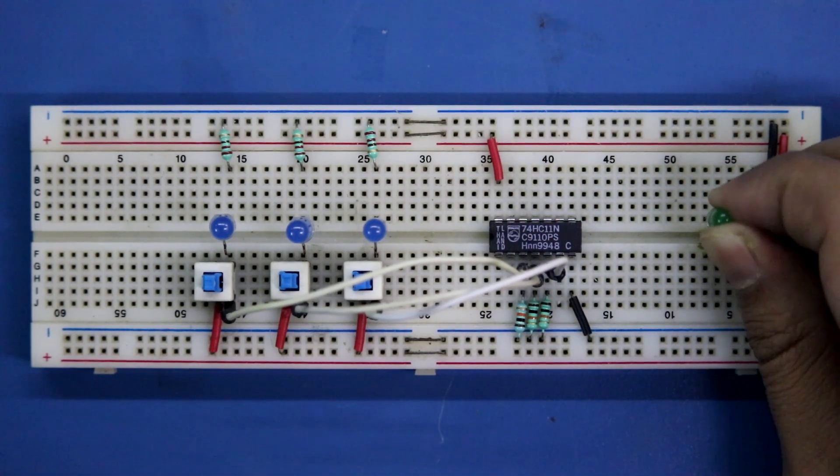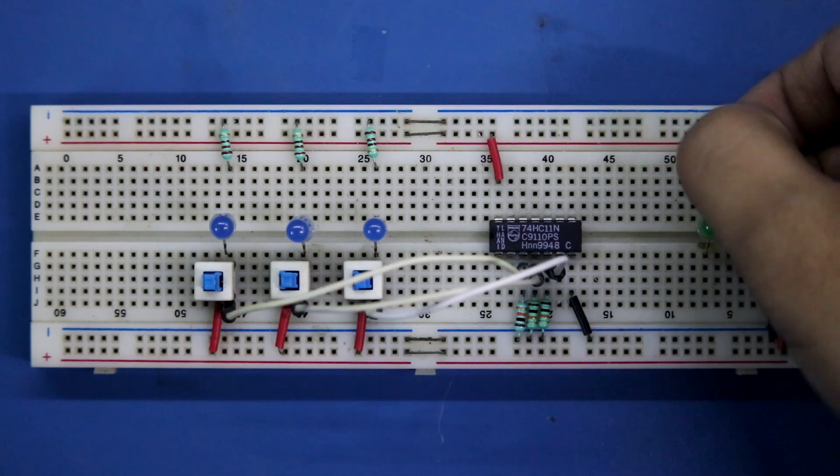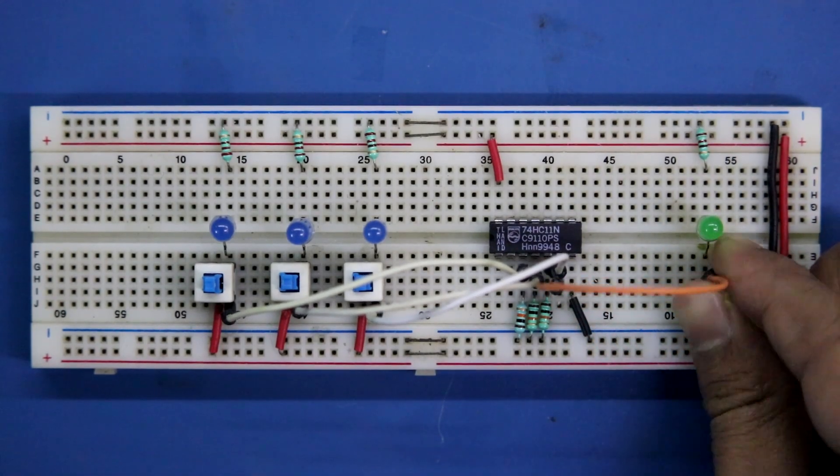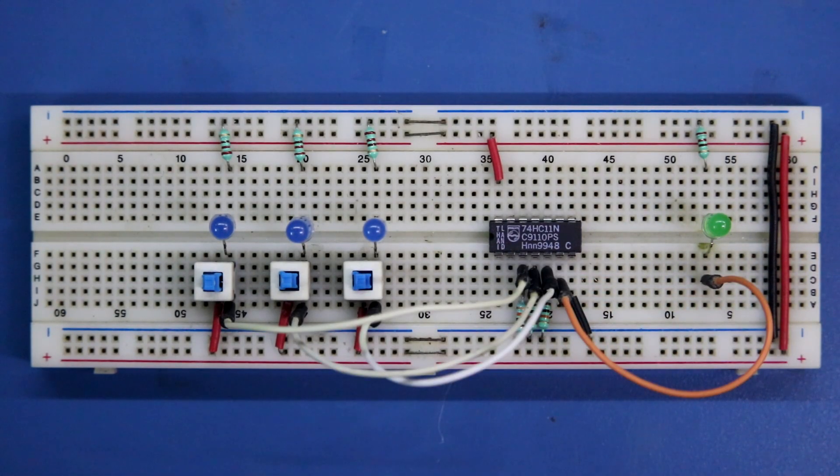This is the output LED. 220 ohm resistor. Pin number 6 is output, so it is connected to the LED. So this is how we have completed the circuit.